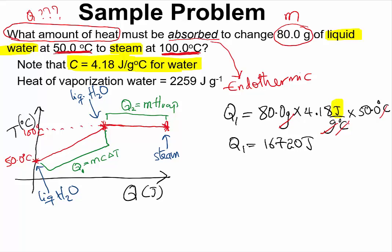Let us calculate Q2. Q2 will be equal to the mass of the liquid water times the heat of vaporization of water. The mass of the liquid water is 80.0 grams. The heat of vaporization of water is given to us as 2259 joules per gram. So 2259 joules per gram.